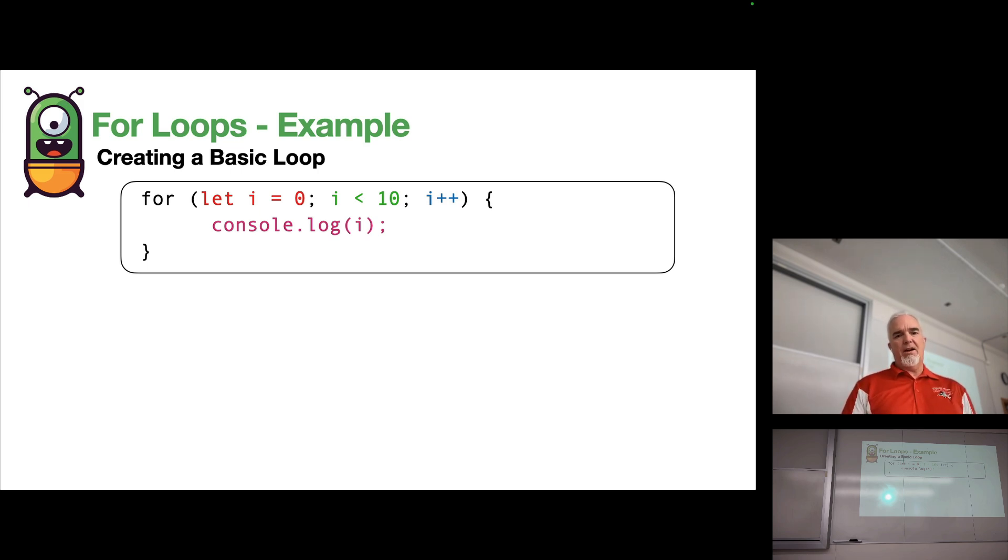We're printing the value of i to the console so we can see that value. All this script is going to do is count from 0 to 9.